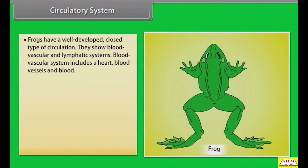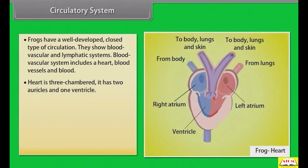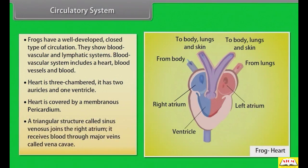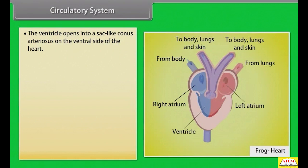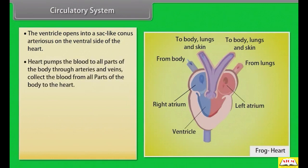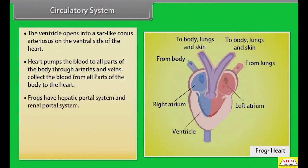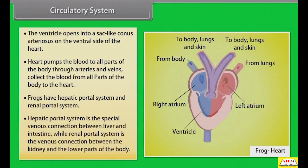Frogs have a well-developed closed type of circulation with both blood vascular and lymphatic systems. The heart is three-chambered with two auricles and one ventricle, covered by a membranous pericardium. A triangular structure called the sinus venosus joins the right atrium and receives blood through major veins called vena cavae. The ventricle opens into a sac-like conus arteriosus on the ventral side of the heart. Frogs have a hepatic portal system — the venous connection between liver and intestine — and a renal portal system — the venous connection between the kidney and the lower parts of the body.